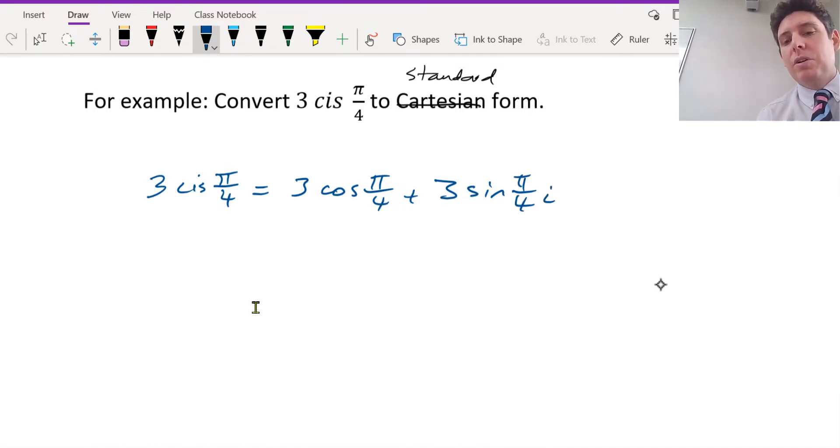You guys aren't super familiar with radians. Pi over 4, any thoughts what that is? 45 degrees, or 180 divided by 4 is how they got that, if you're wondering.